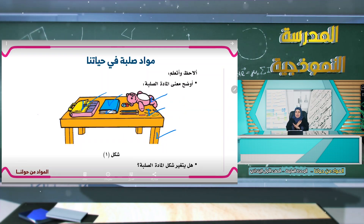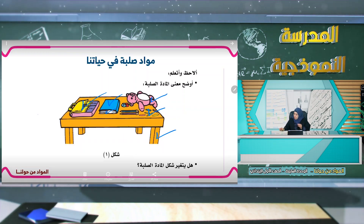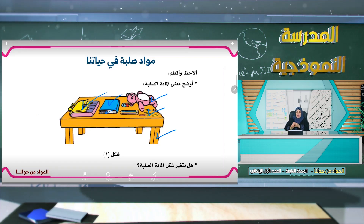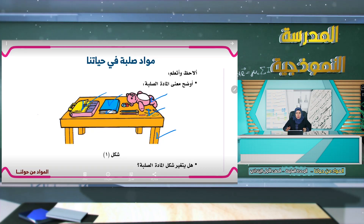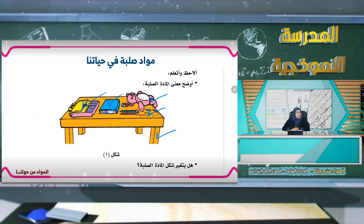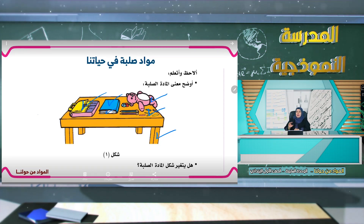لا يتغير شكل المادة الصلبة. هذا القلم شكله واحد سواء وضعته هنا أو هناك، وإذا قمت بوضعه في أي مكان فسوف يحافظ على شكله. وكذلك هذا الجهاز اللوحي إذا وضعته في أي مكان يبقى بنفس الشكل. إذن المادة الصلبة لا يتغير شكلها مهما حركناها من مكانها.